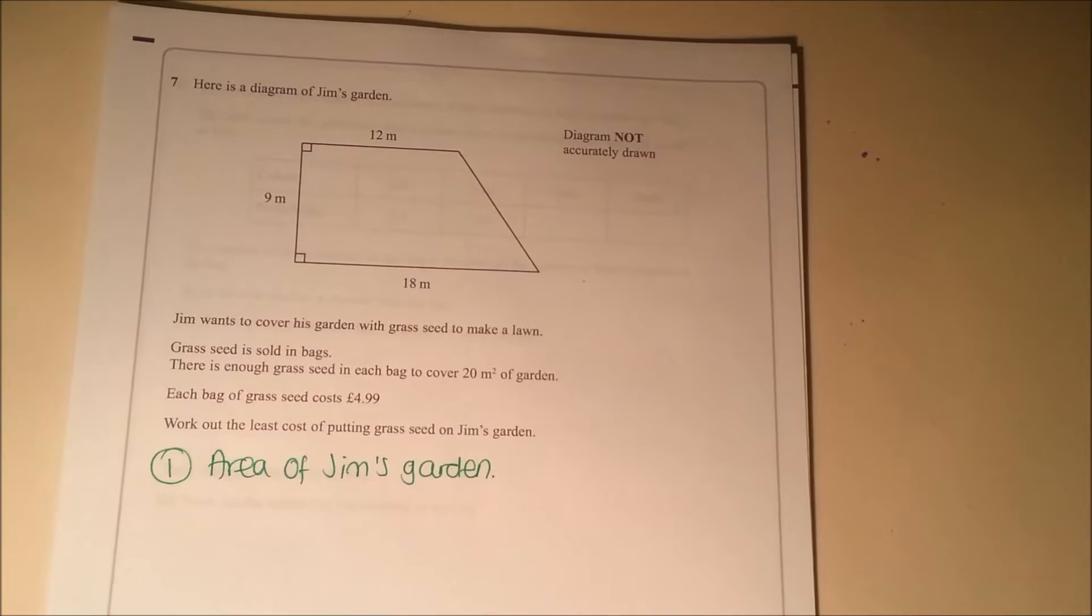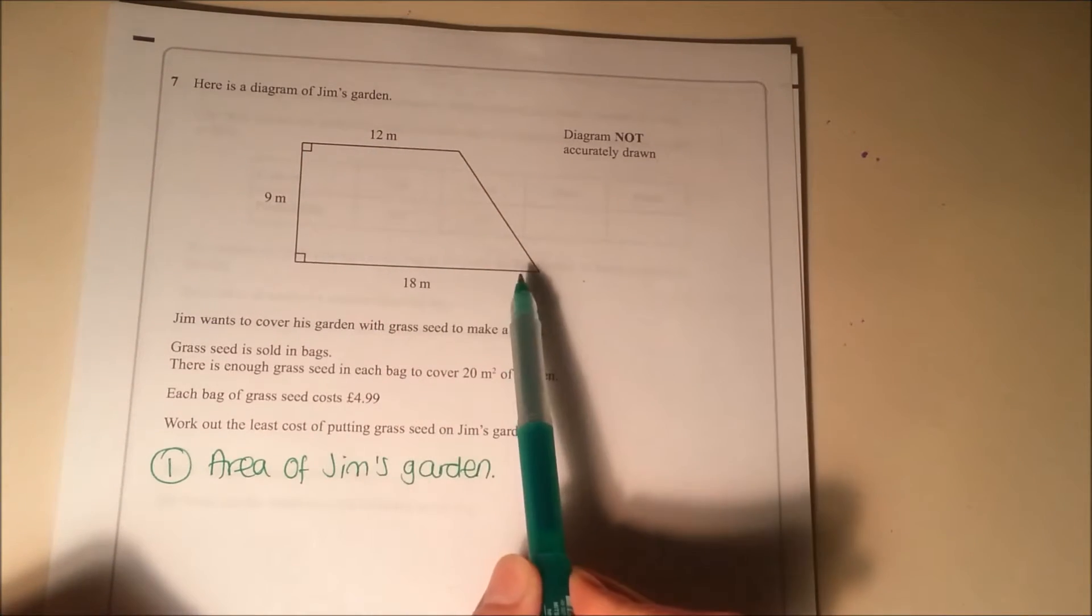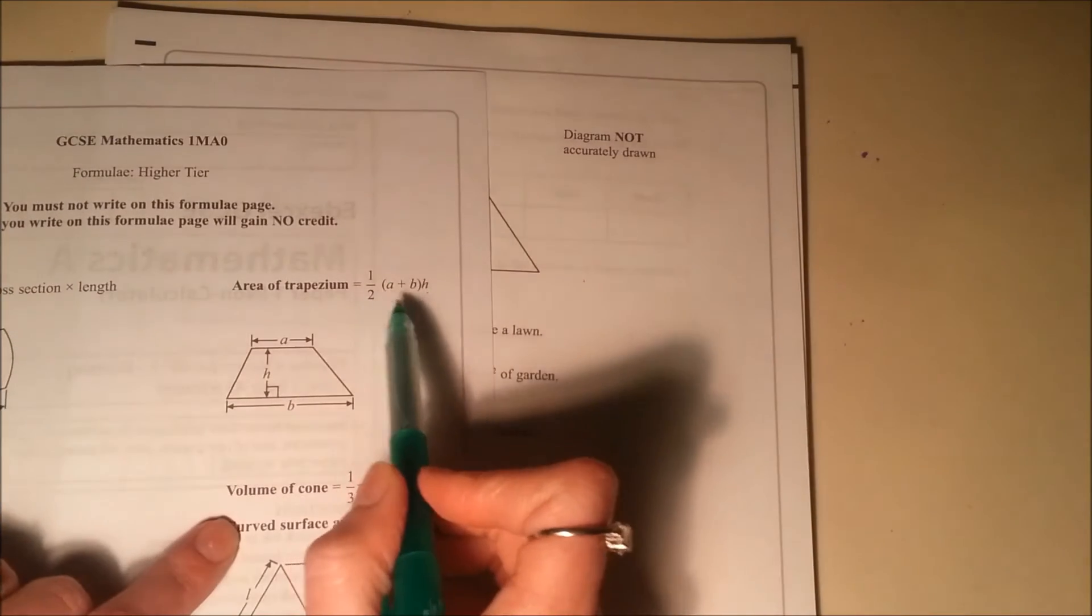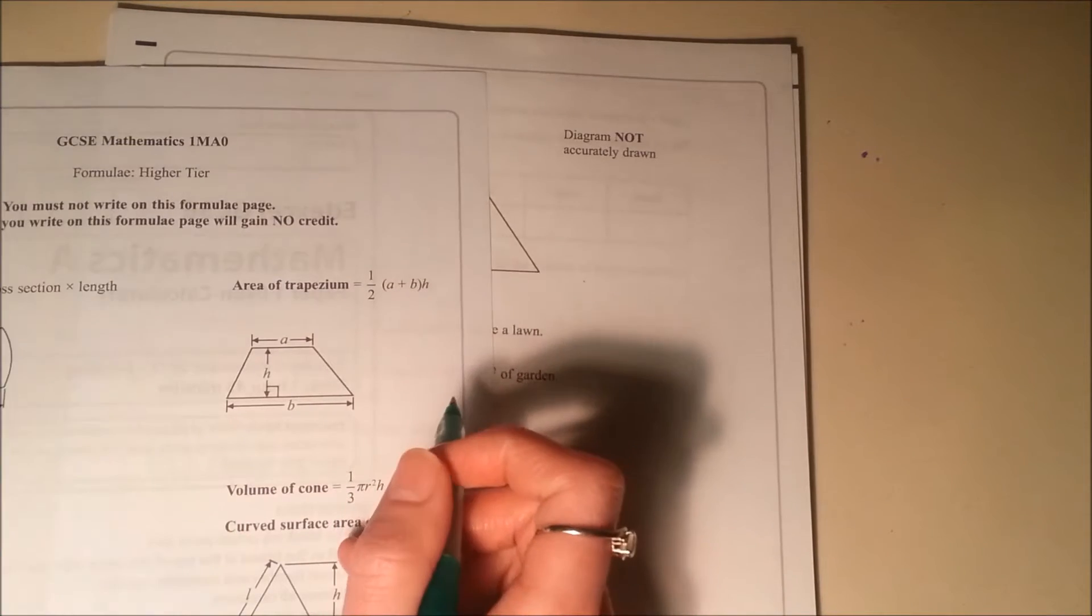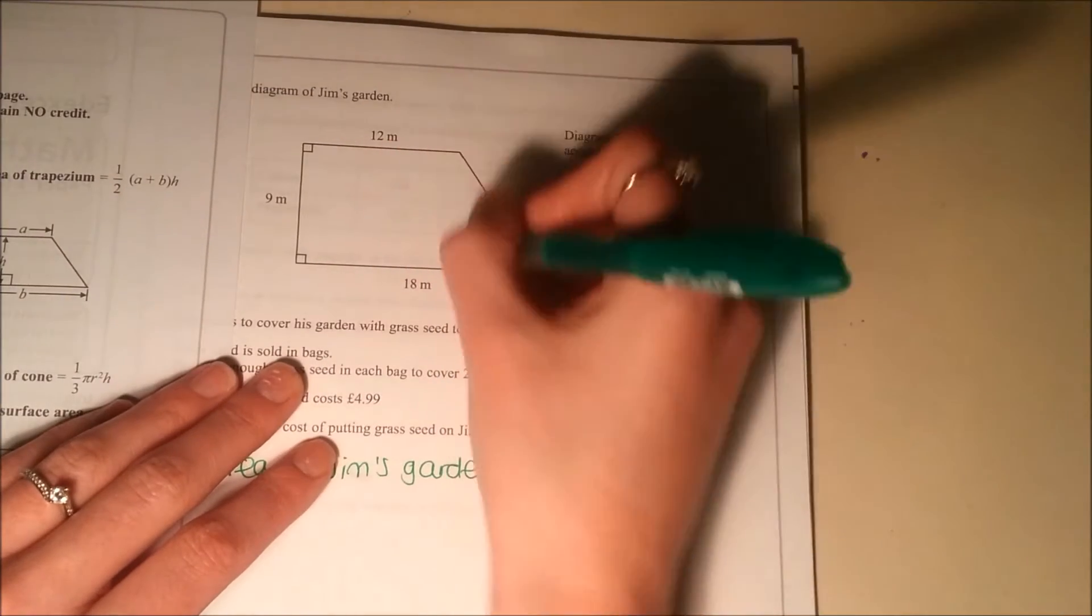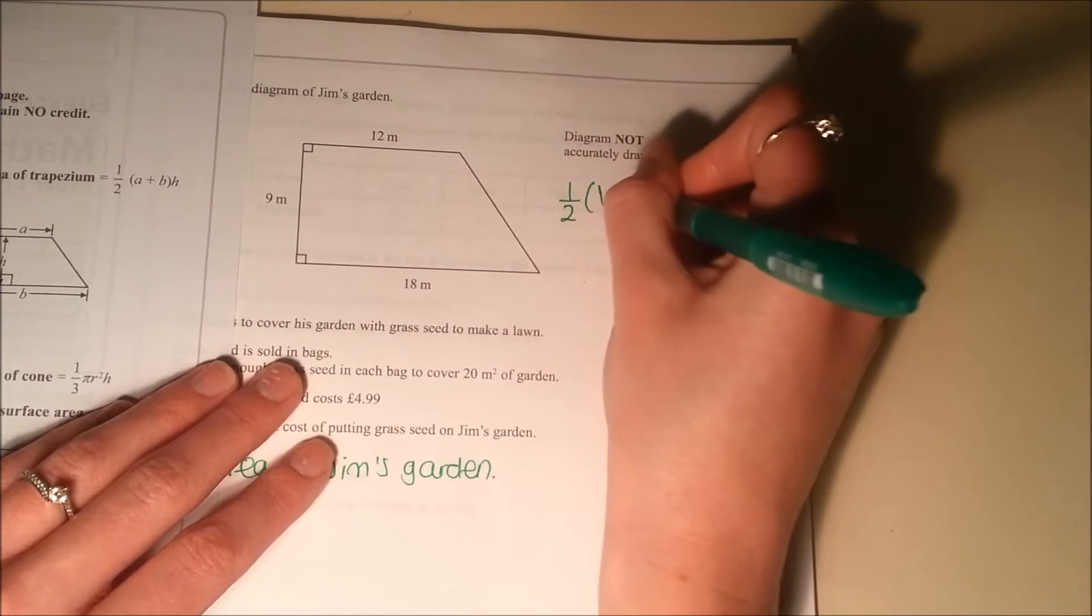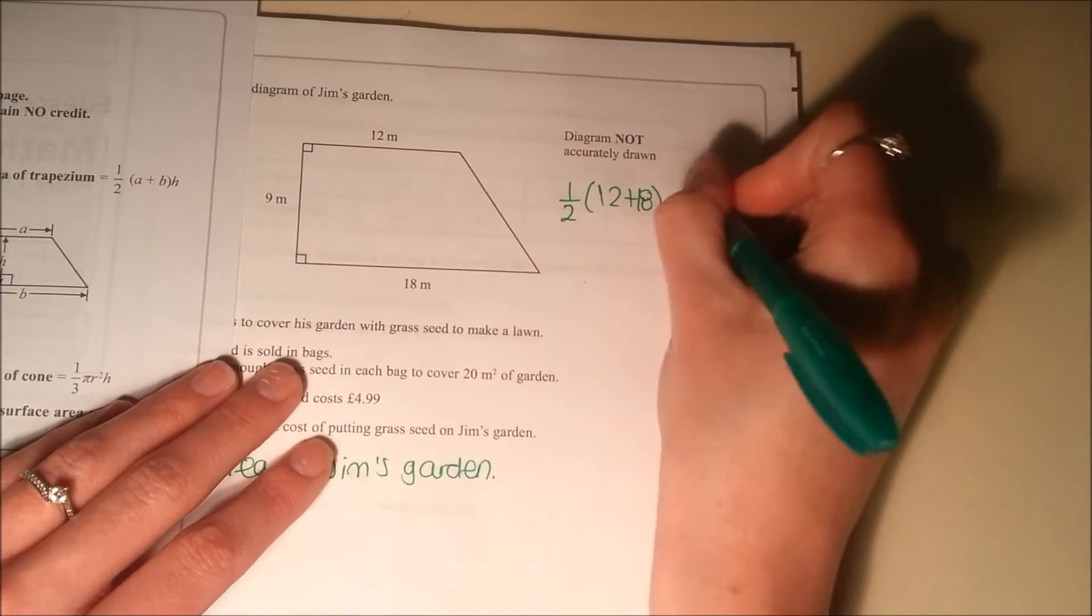A couple of different ways you can do this. First of all, if you realize that it's a trapezium, so you've got a pair of parallel sides there, you can use the trapezium formula which is on the formula page. So it's half of the parallel sides added together multiplied by the height. So what we could do here is we could say that the area of that is going to be a half of 12 plus 18 multiplied by the height 9.